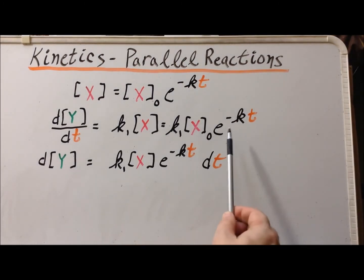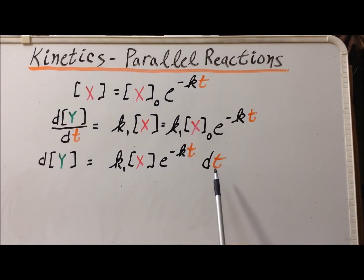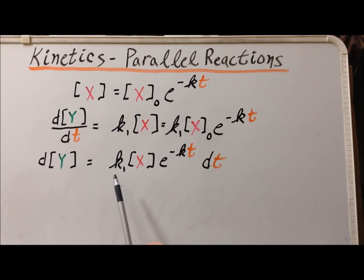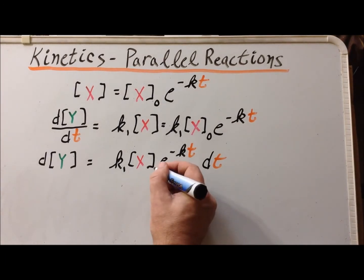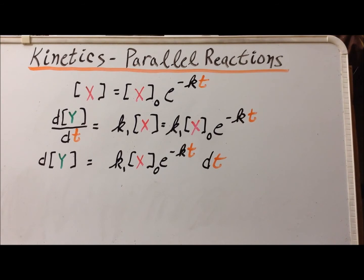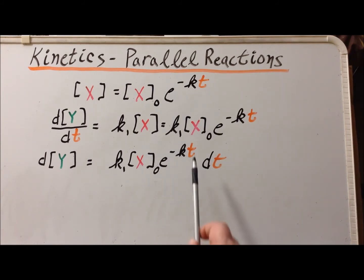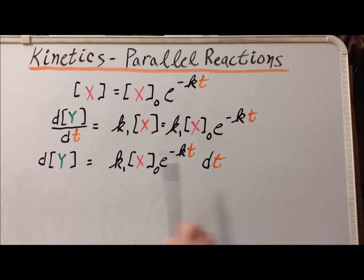We multiply each side of the equation by dt. So d[Y] equals K1 times [X₀] times e^(-KT) dt. This is important because the right-hand side is entirely a function of T, and the left-hand side is entirely a function of [Y], so we have a separable differential equation.